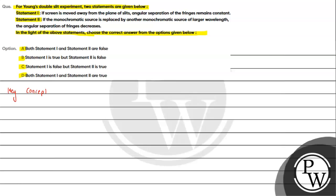The key concept we will be using is Young's double slit experiment. We are interested in checking the angular separation. We can talk about linear width and angular width. The linear width expression is given by lambda times capital D upon small d.